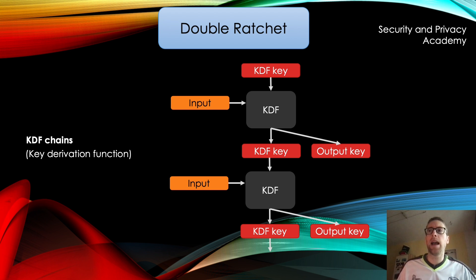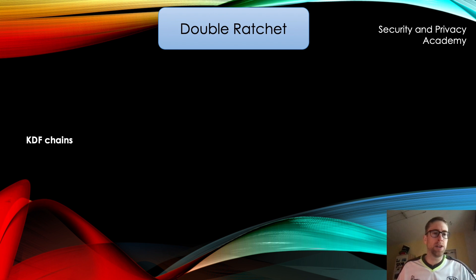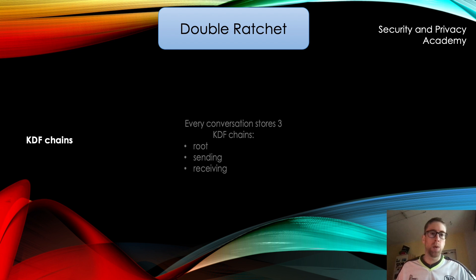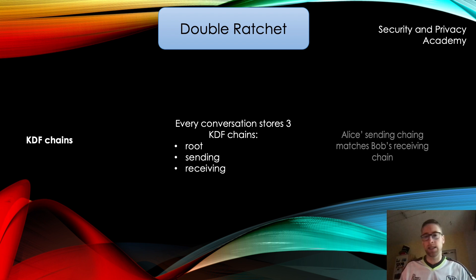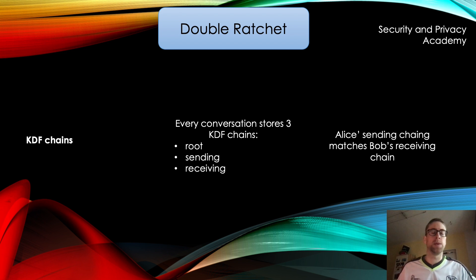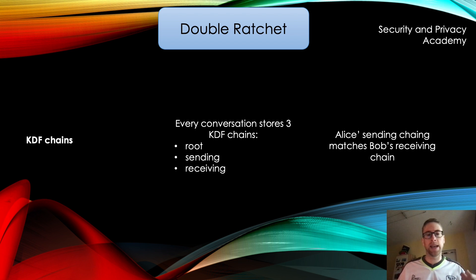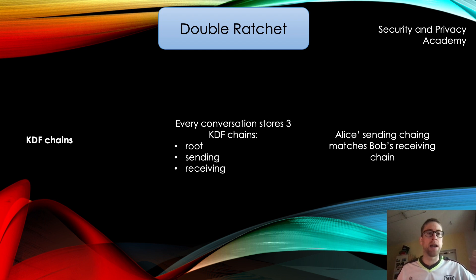Every conversation stores three of those KDF chains: a root chain, a sending chain, and a receiving chain. If Alice has a conversation with Bob, her sending chain matches Bob's receiving chain and vice versa. Because the keys are symmetric, this is how they can encrypt and decrypt messages — by having the same keys and chains, or by being able to derive the same keys from the same inputs.